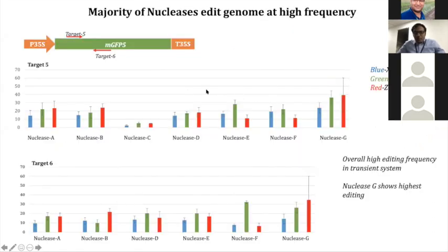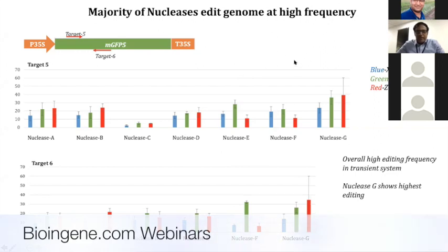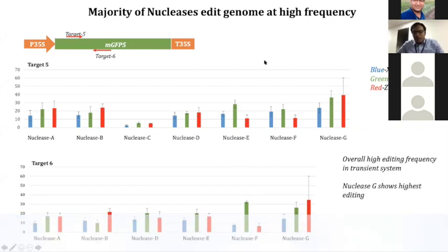What we did was to test seven different nucleases in the protoplast system to see which one of the enzymes gives us higher editing frequency.